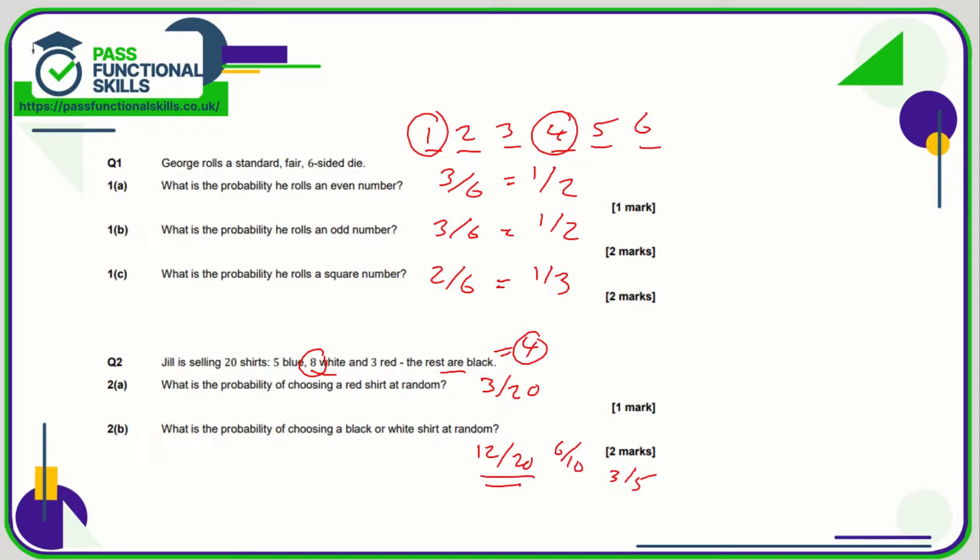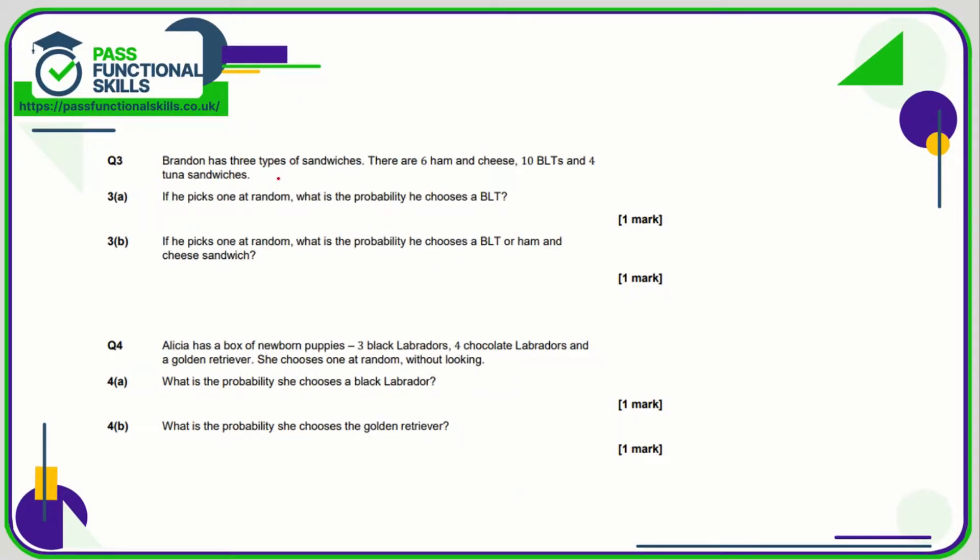Question three: Brandon's three types of sandwiches, six ham and cheese, 10 BLTs, and four tunas. So in total there are 20 sandwiches. So the probability of picking a BLT is 10 out of 20, which is the same as one out of two, a half.